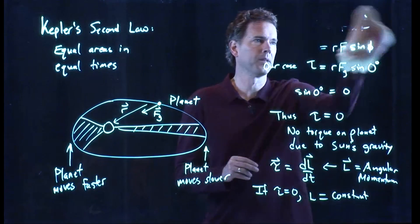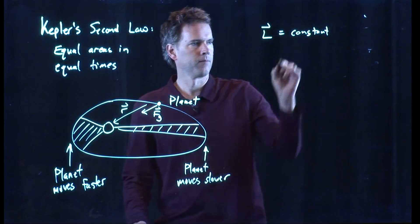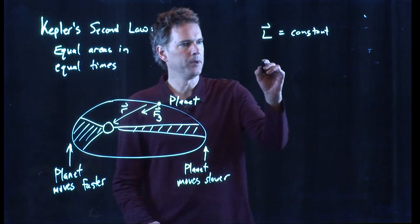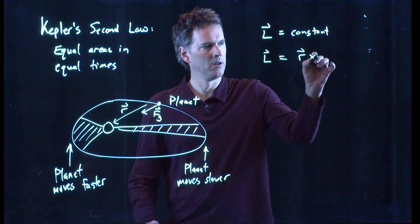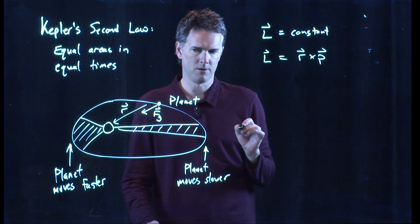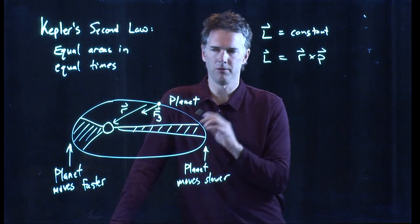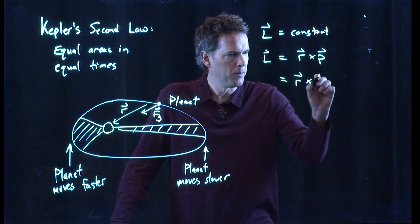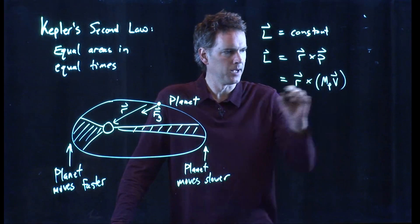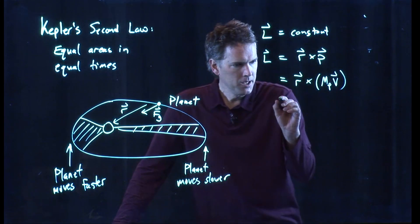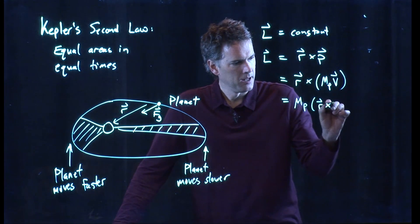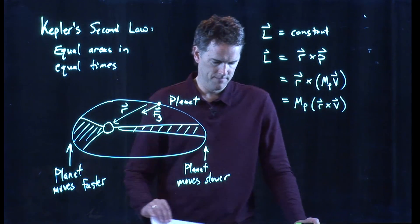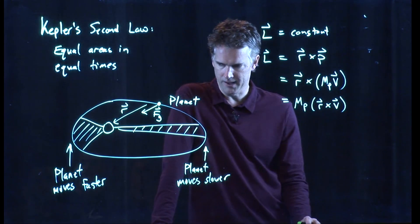All right. Let's use that now to calculate something about speeds. The angular momentum of the planet is constant. But we know what angular momentum is. Angular momentum is r cross p. All right. And r is the position vector. p is the momentum of the planet. And we know exactly what momentum is. Momentum is mass times velocity. That mp can, in fact, come out in front. And so we get mp is just r cross v.